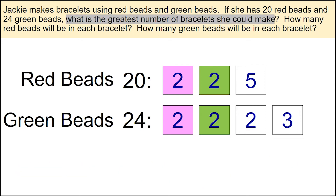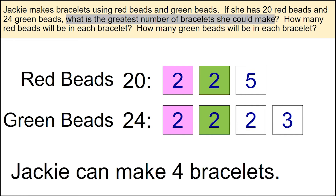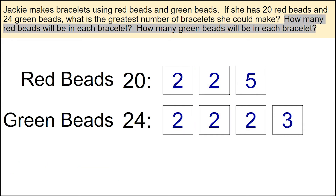Going back to the question: what is the greatest number of bracelets she could make? Since we found the greatest common factor, we now see Jackie can make 4 bracelets. Moving to the second part of the question, how many red beads will be in each bracelet, as well as how many green beads will be in each bracelet?